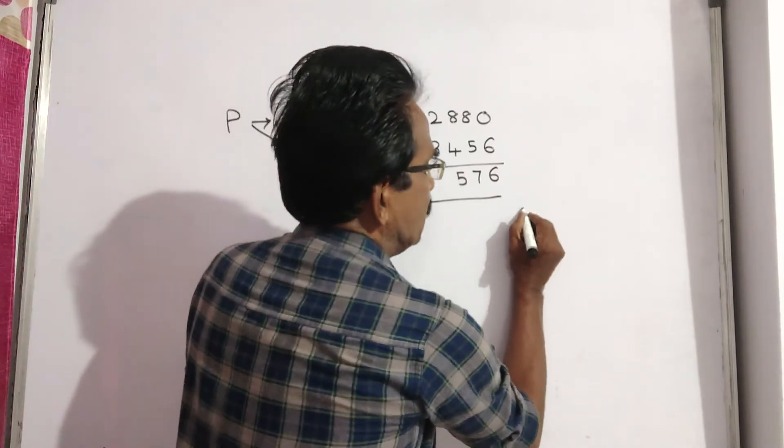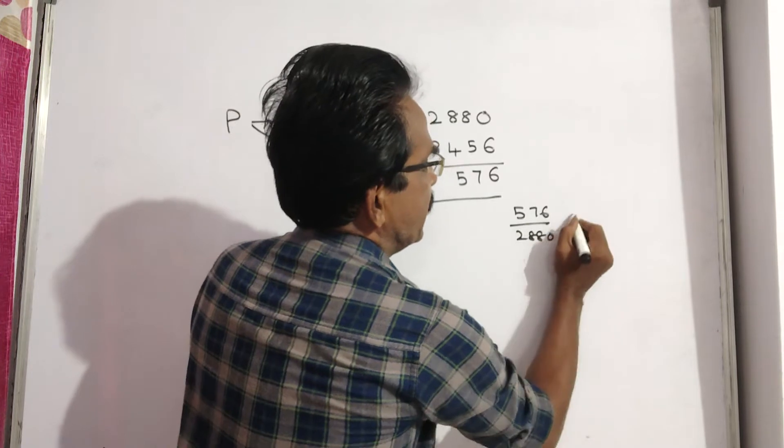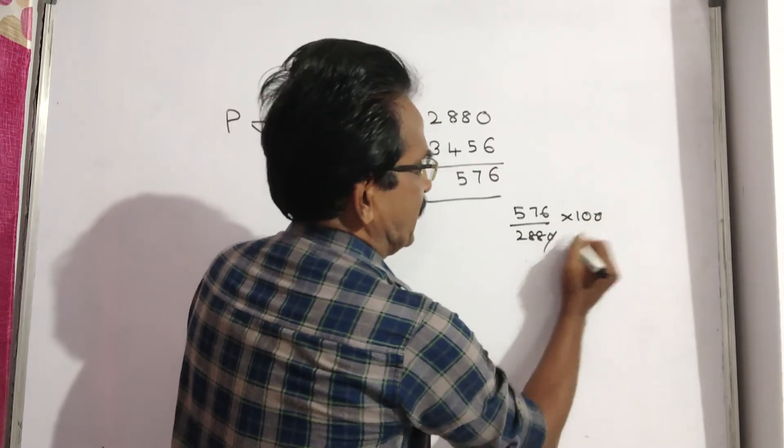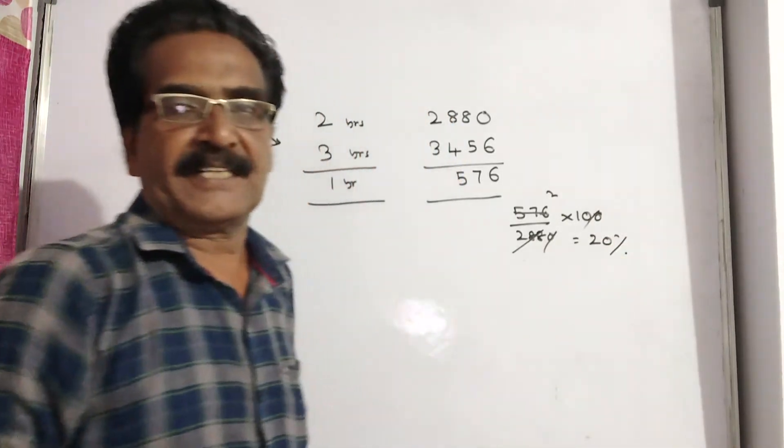Let us find the rate of interest. So, 576 by 2880 into 100 - this is the rate of interest. So, 20% is the rate of interest.